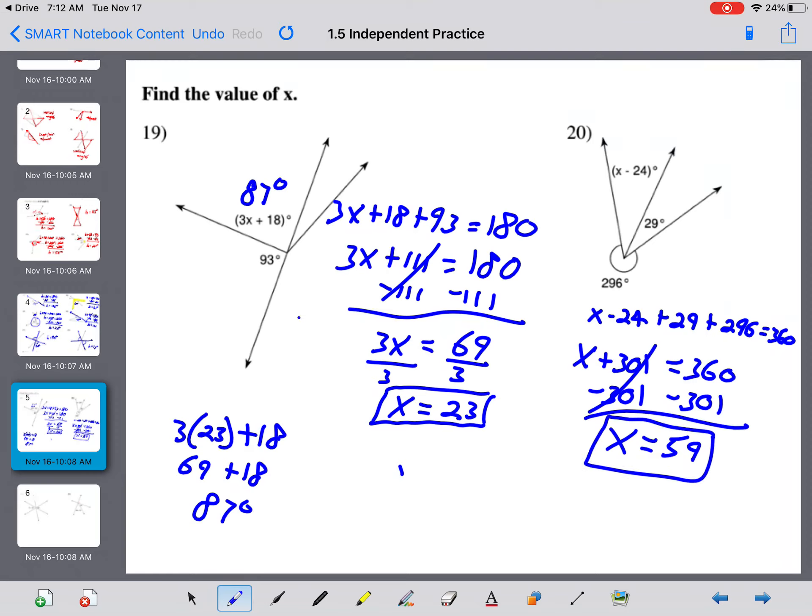Now, you have to solve 59 minus 24. And if you throw that in your calculator, you get 35 degrees.